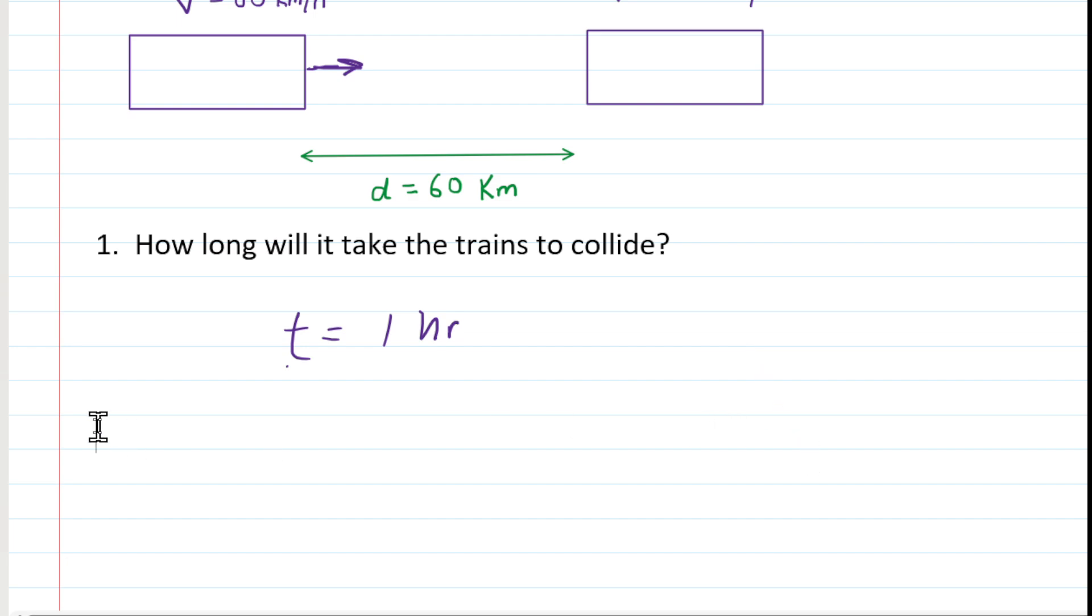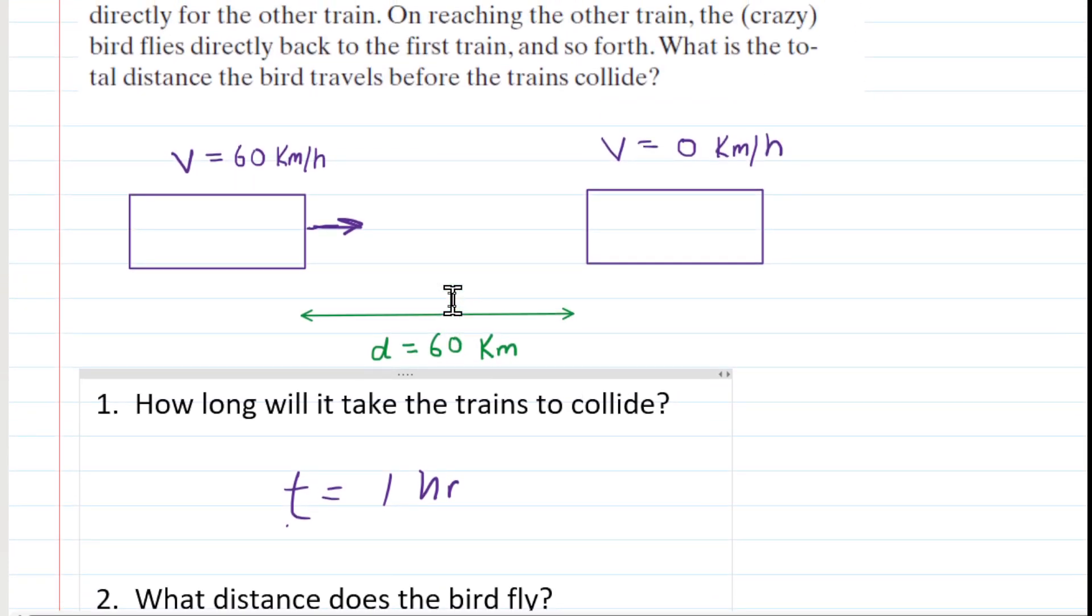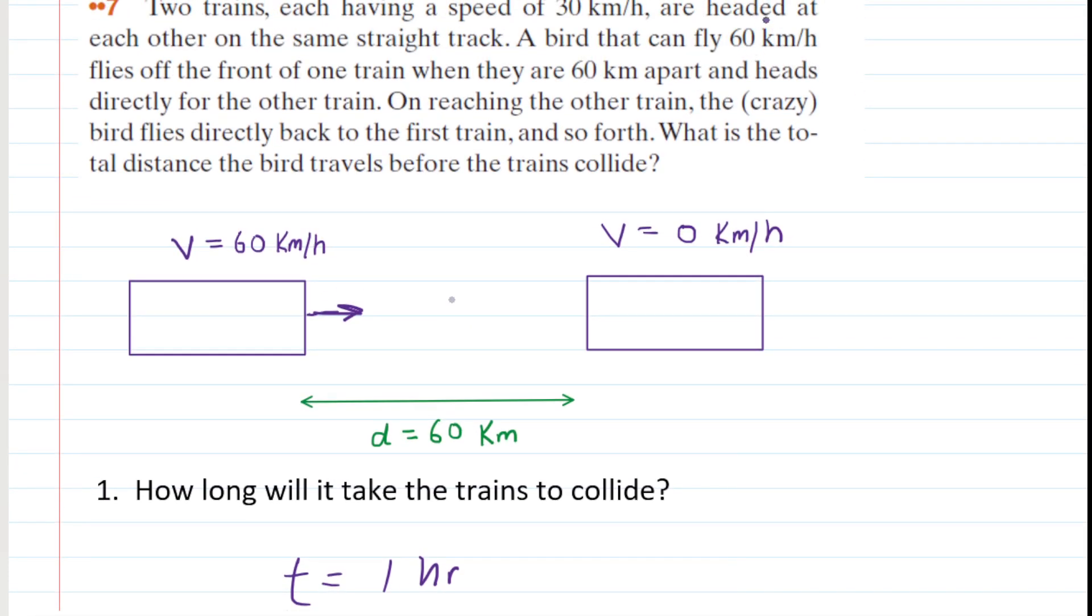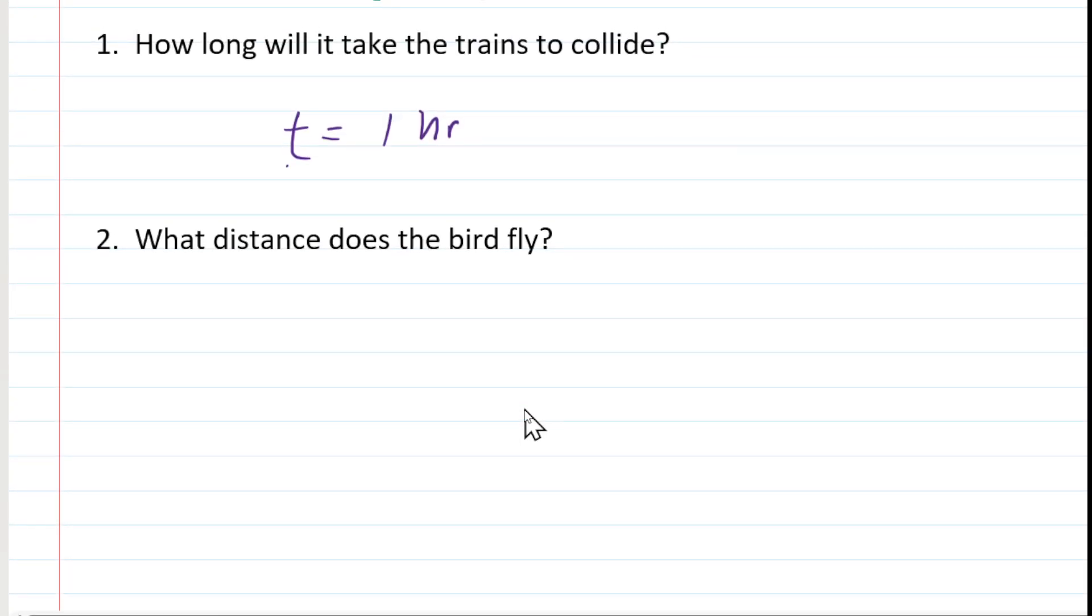So now we pose the second question. And that would be what distance does the bird fly? We know it's going to be flying in a time span of one hour. But what about the distance? Well, the bird was stated to be flying at 60 kilometers per hour. So if one hour has passed, then the bird has flown 60 kilometers. So the answer there is just 60 kilometers.